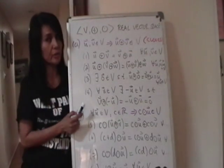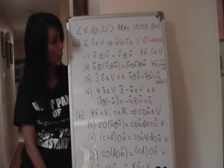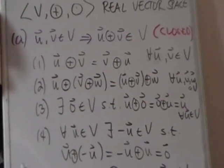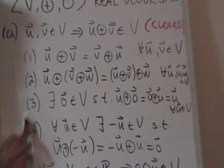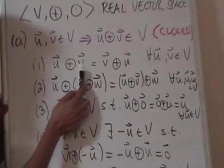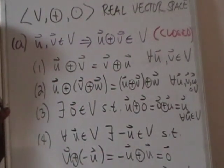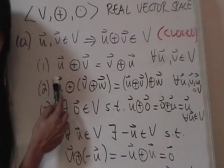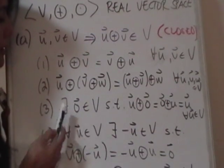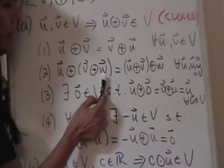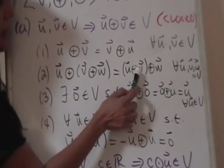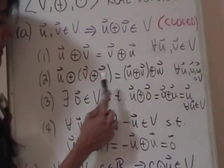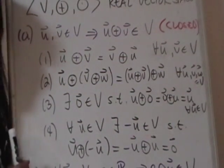After checking closure for circle-plus and circle-times, you check four conditions related to the circle-plus operation. The first says U circle-plus V equals V circle-plus U for any U and V in V — meaning circle-plus is commutative. The second says U circle-plus (V circle-plus W) equals (U circle-plus V) circle-plus W for any U, V, W in V — that is the associative property for circle-plus.